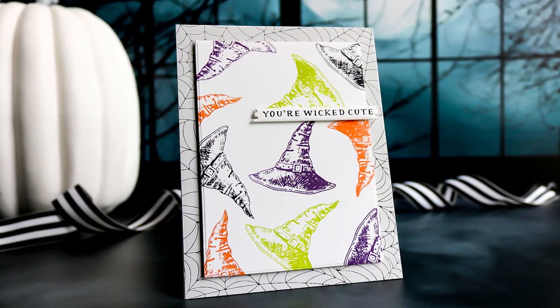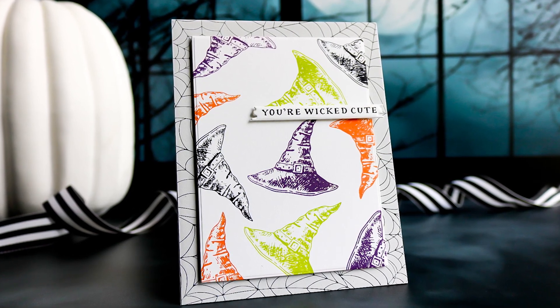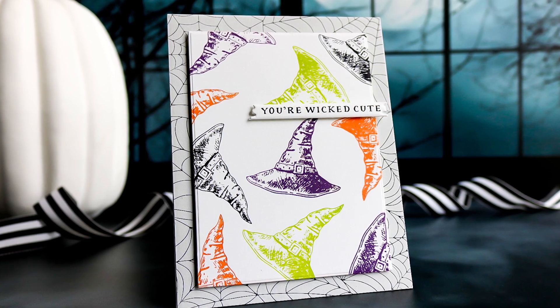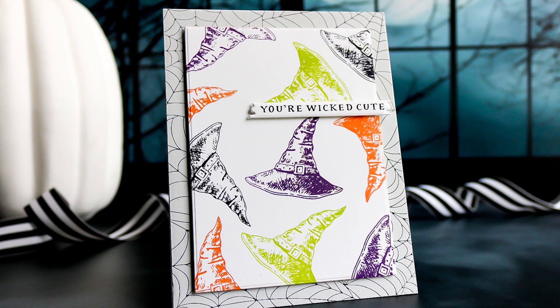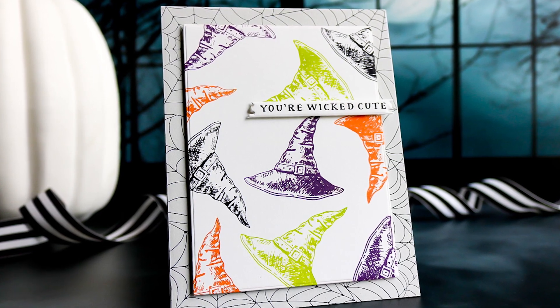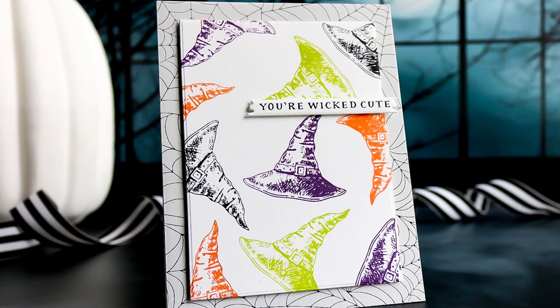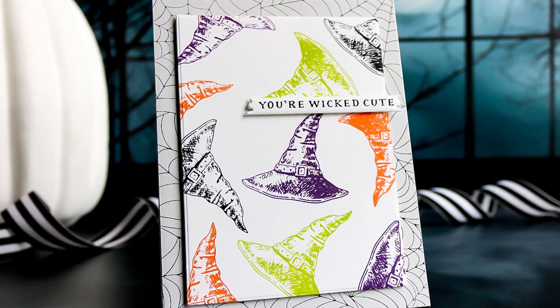Okay so we're going to get started with this first sample and this is the one that I was just speaking about with the witch's hats from that icon set and how I used VersaFine Clair inks to stamp them in different colors and that was from when I was trying to figure out what would be the best way to go about randomly stamping and you can see how some of the hats were really close together but it was okay.